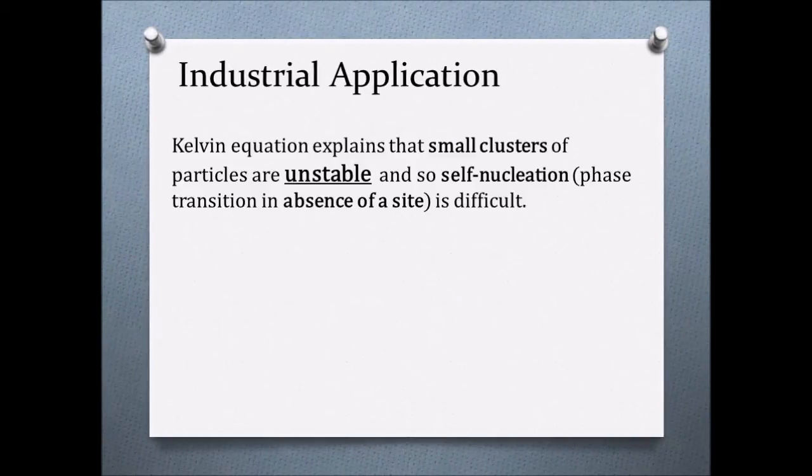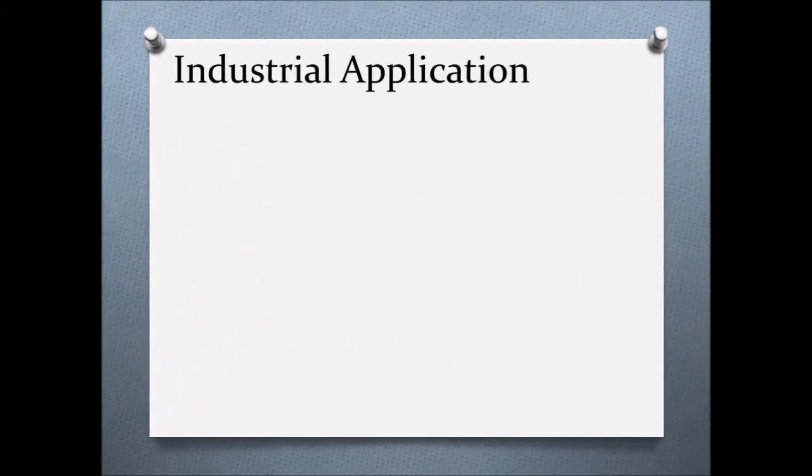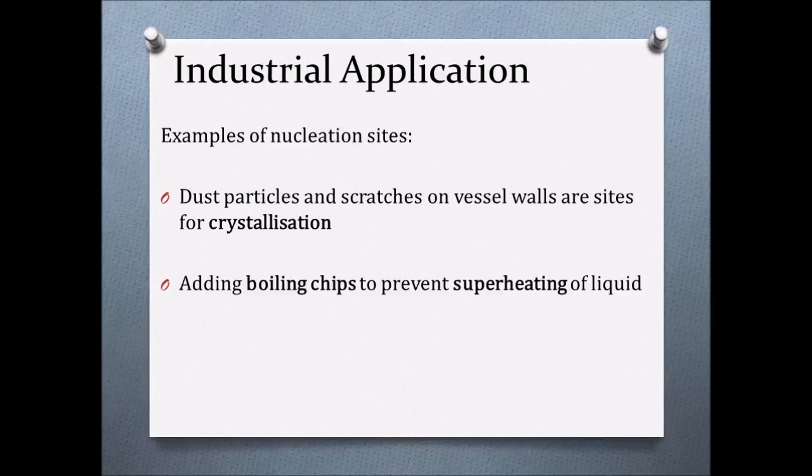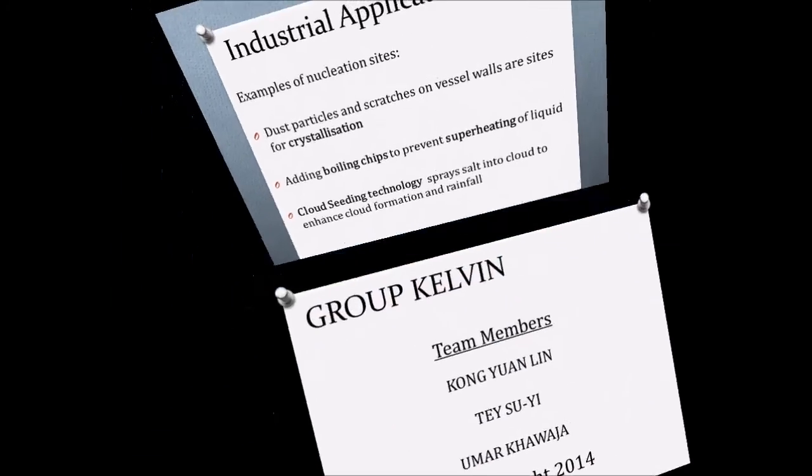Kelvin's equation explains that small clusters of particles are unstable, and so self-nucleation, which is a phase transition in absence of a site, is difficult. Engineers overcome these limitations by introducing sites for nucleation. Dust particles and scratches on vessel's wall are sites for crystallization. Boiling chips are added to liquid to prevent superheating. Also, cloud seeding technology sprays salts into clouds to enhance cloud formation and rainfall.